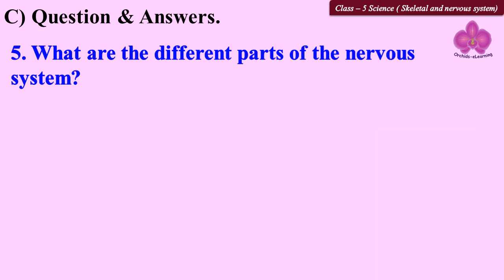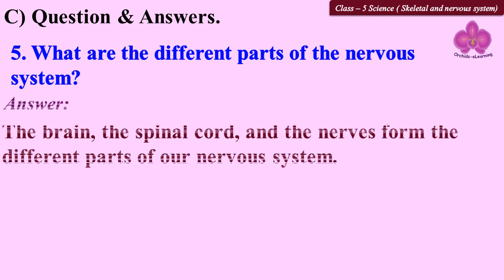Question 5: What are the different parts of the nervous system? The brain, the spinal cord, and the nerves form the different parts of our nervous system.